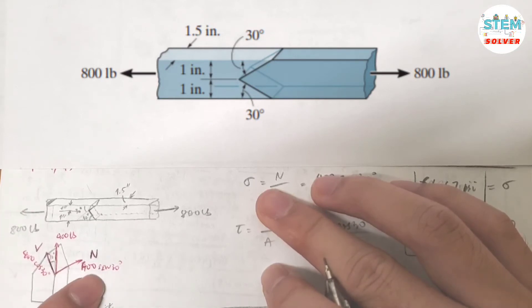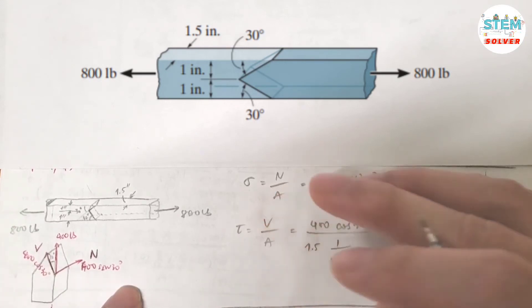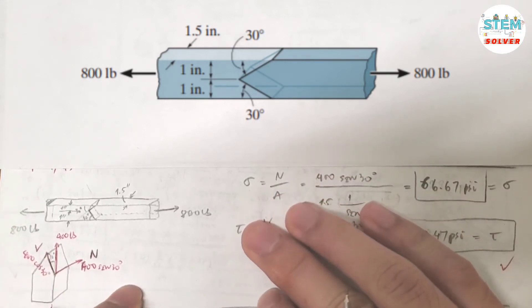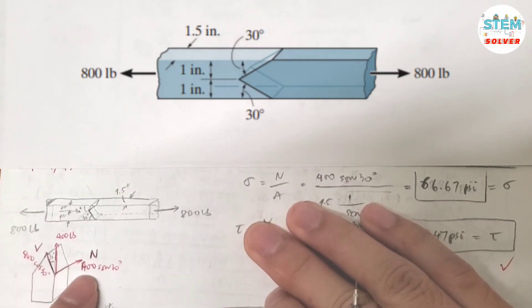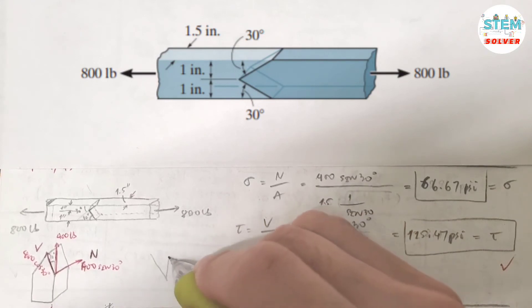Basically, the shear force and the normal force are the x and y components of the 400 pounds force. Normal stress is equal to normal force divided by area. The normal force is 400 times cosine 30. You have this angle right here, and this is from a triangle. If you cannot visualize, this is your V, this is your N, and this force is 400 pounds.